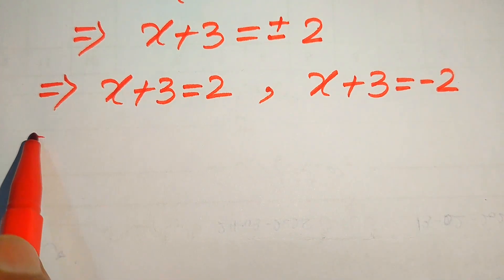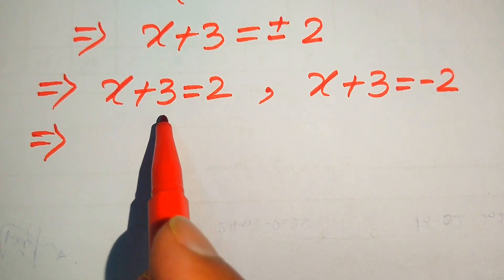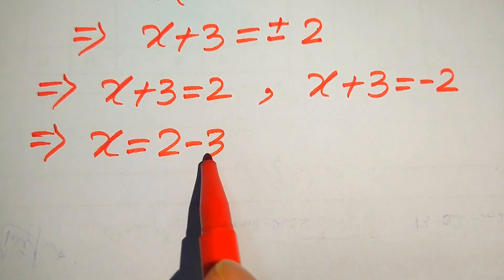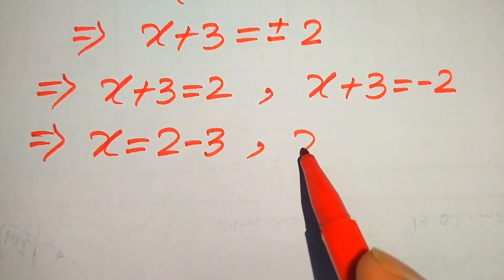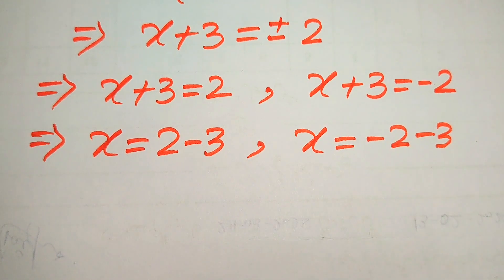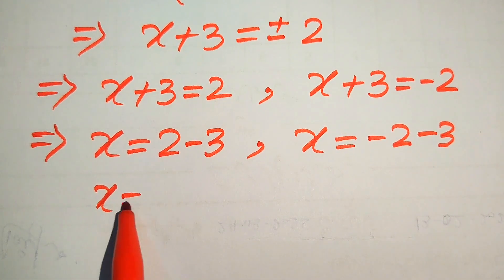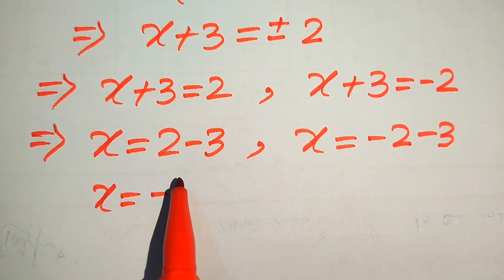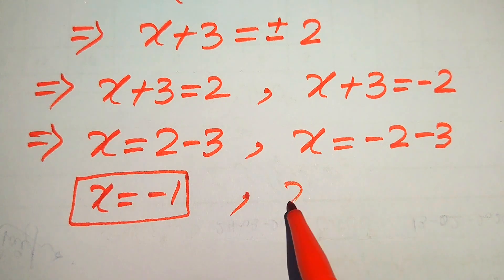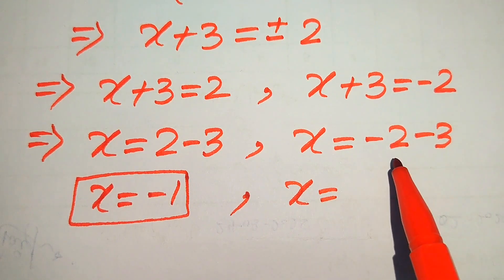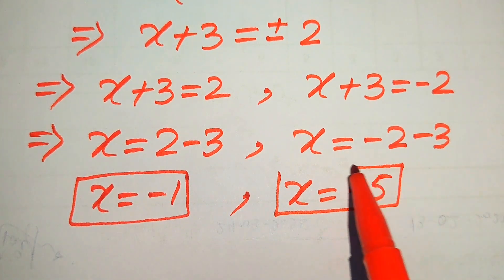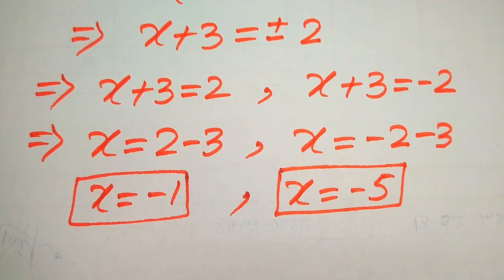Moving the +3 to the right-hand side: from Case 1, x = 2 − 3, so x = −1. This is our first root. From Case 2, x = −2 − 3, so x = −5. This is our second root. So from the first method we find two roots: x = −1 and x = −5.